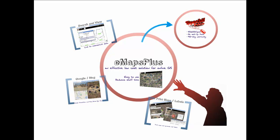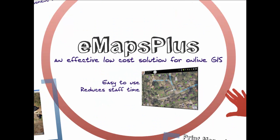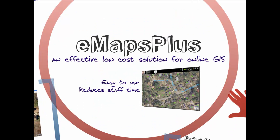E-Maps Plus is an effective, low-cost solution for online GIS. E-Maps Plus is an easy-to-use GIS website designed for local government to reduce the staff time associated with public record requests and general telephone inquiries.